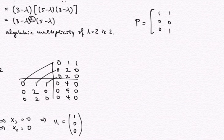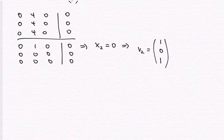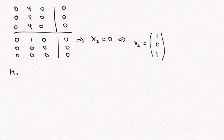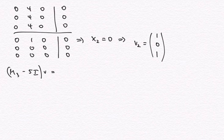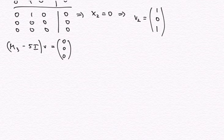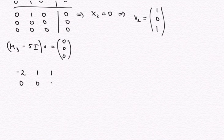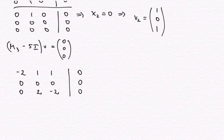So let's find that one. I need to solve (M3 minus 5I) times a vector of three entries equals (0, 0, 0). M3 minus 5I is: 3 minus 5 is minus 2, 1, 1; 1, 5 minus 5 is 0, 0; 0, 2, 3 minus 5 is minus 2. Setting this equal to the zero vector.